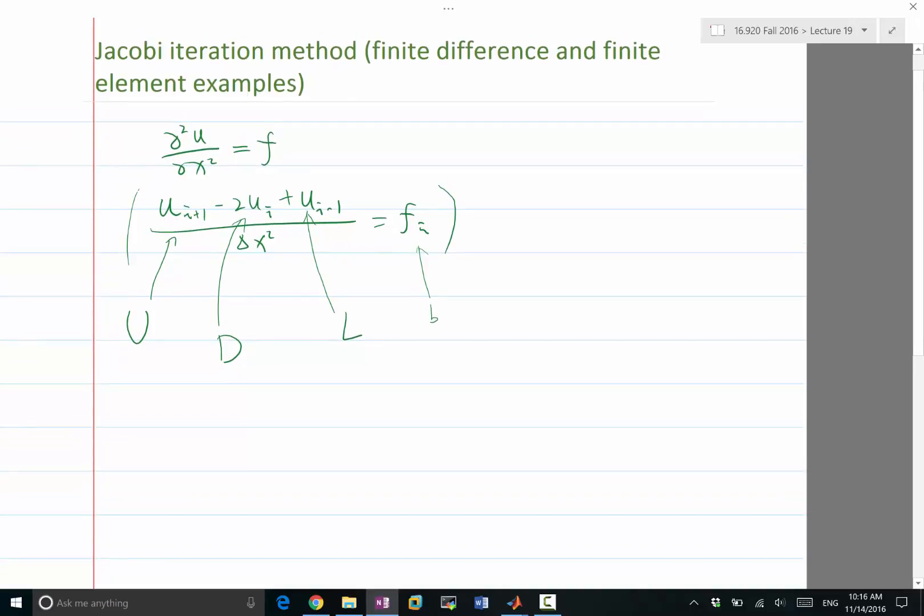So let's keep the d term on the left-hand side and move all the other terms to the right-hand side. What we have is minus 2 over delta x squared times u_i is equal to f_i minus u_{i+1} over delta x squared minus u_{i-1} over delta x squared.